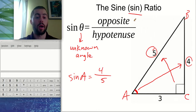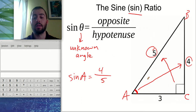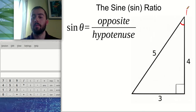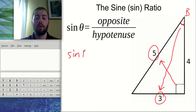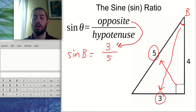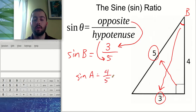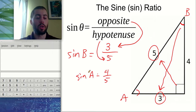Sine always means opposite over hypotenuse. We can also find the sine ratio for angle B. For angle B, the opposite side is three and the hypotenuse stays the same at five because it's always across from the right angle. So the sine of angle B would be three fifths. The sine ratio is going to be different depending on which angle you're looking at — sine of A was four fifths, sine of B was three fifths.